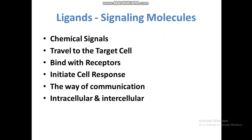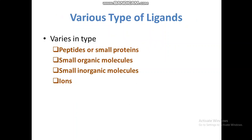Ligands may be intracellular or extracellular. There are various types of ligands depending on their composition. Ligands may be peptides or small proteins, small organic molecules, small inorganic molecules, or different types of ions.